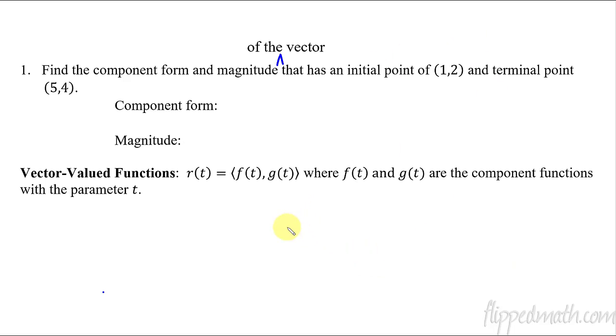Let's try one quick problem dealing with vectors. So we're going to find a component form and magnitude of the vector. Find the component form and the magnitude of a vector that has an initial point of (1, 2) and a terminal point of (5, 4).